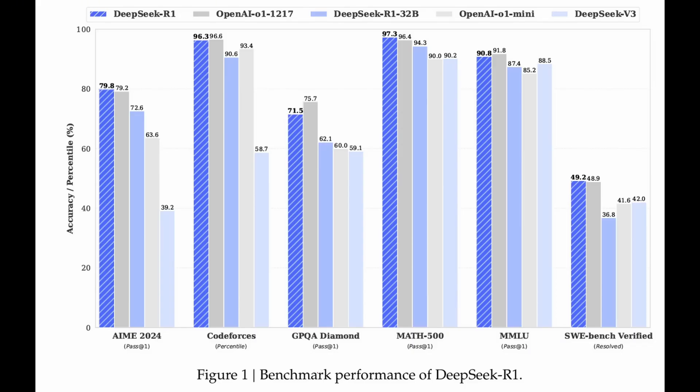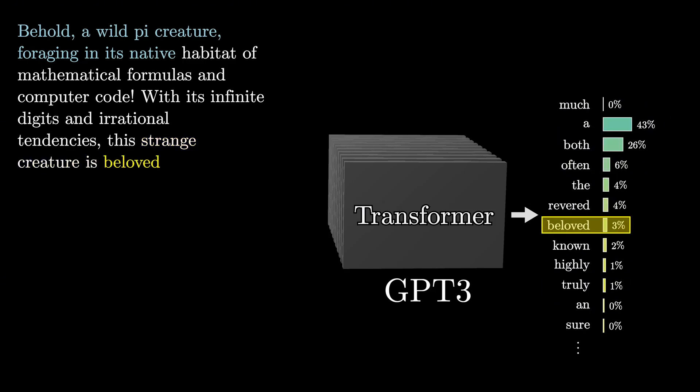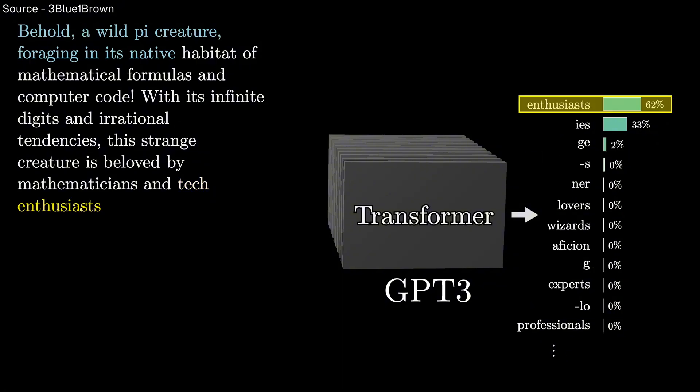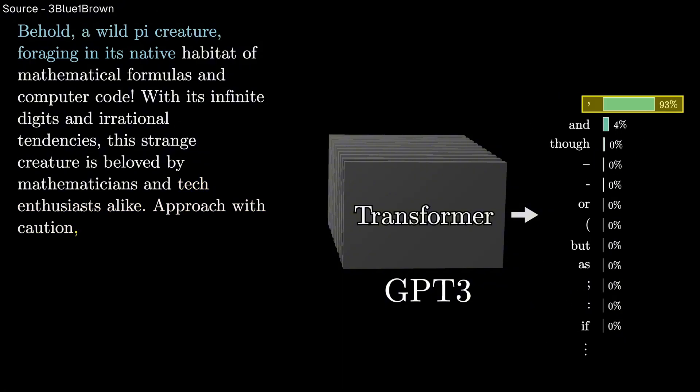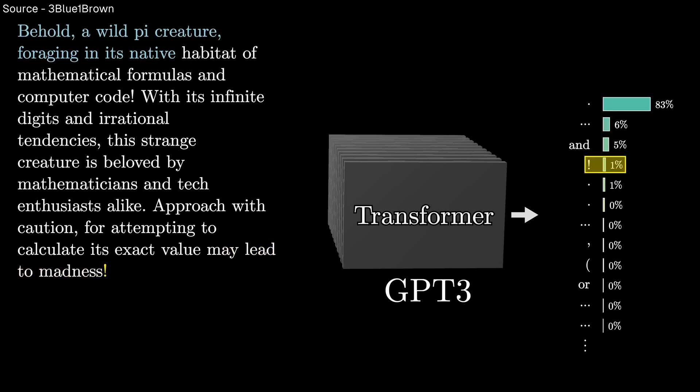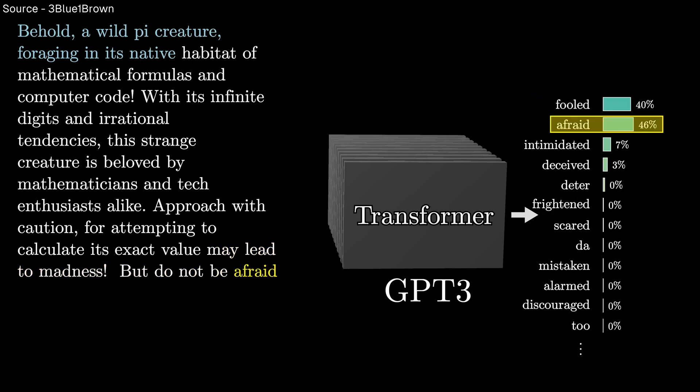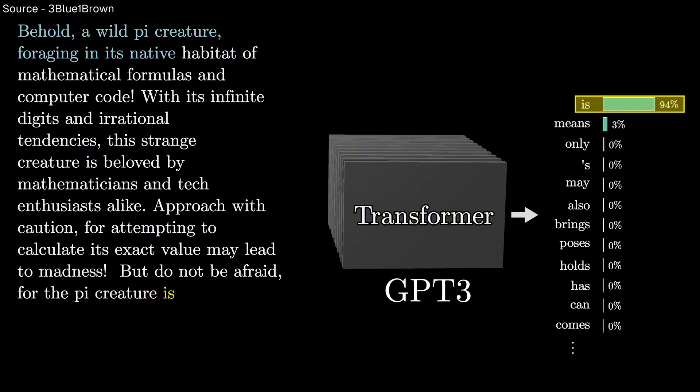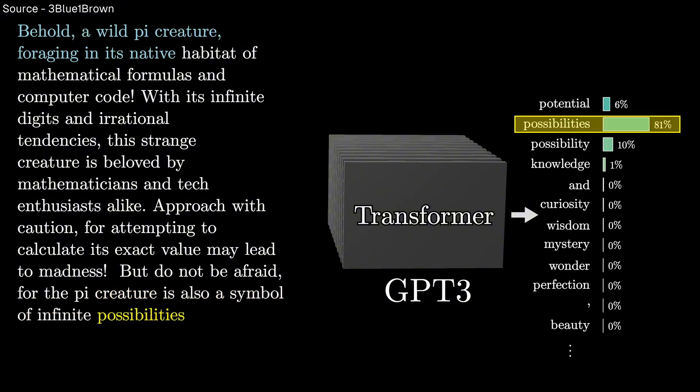Consider the rapid progress we've already seen. In just a few years, we've gone from models that could barely write coherent sentences to ones that can engage in sophisticated dialogue, write code, and even exhibit creative abilities. This progress hasn't come from fundamental breakthroughs in AI architecture. It's come primarily from scaling up existing approaches.